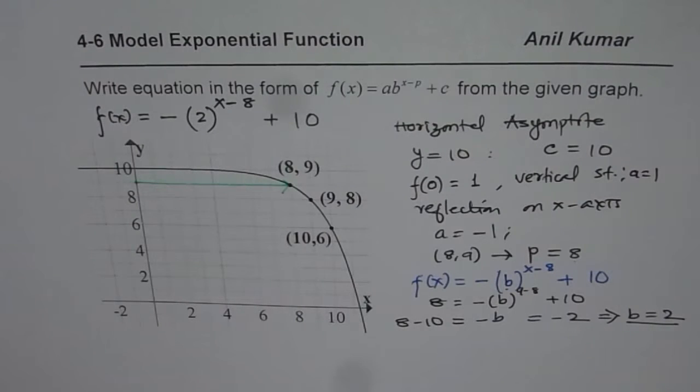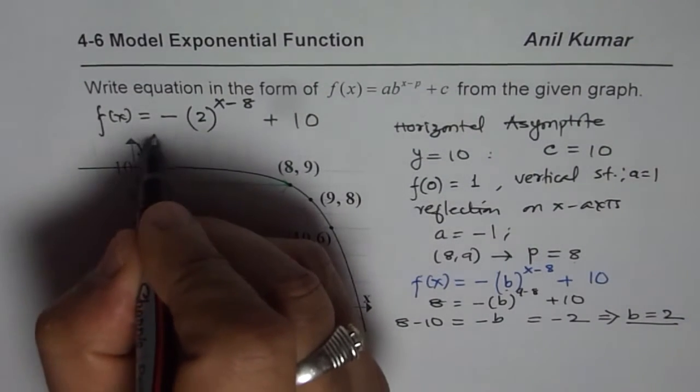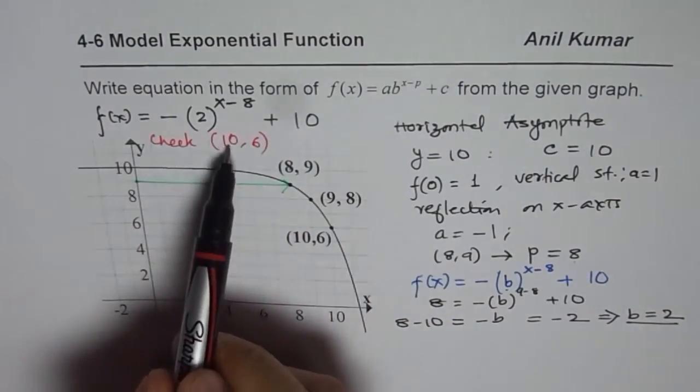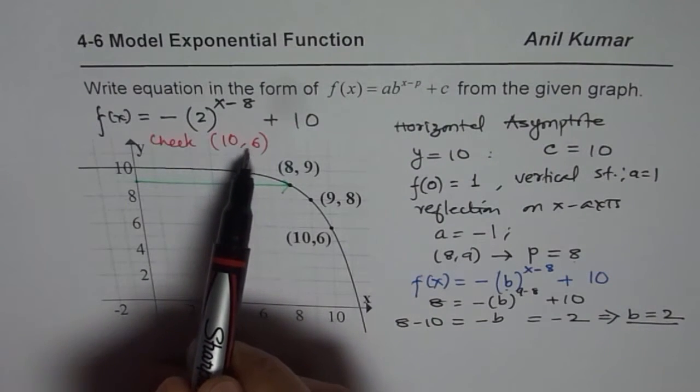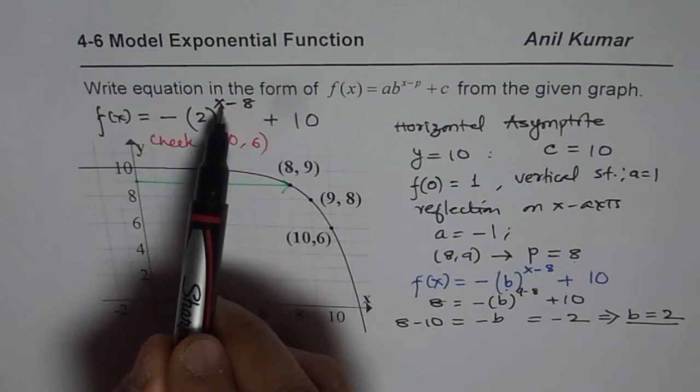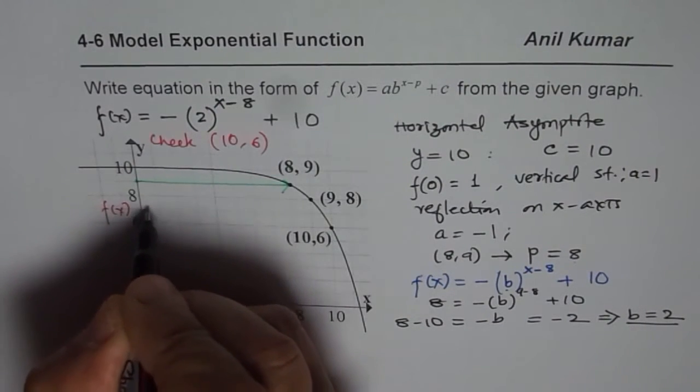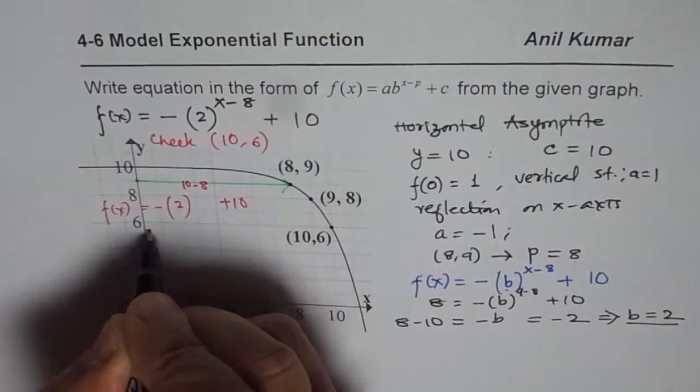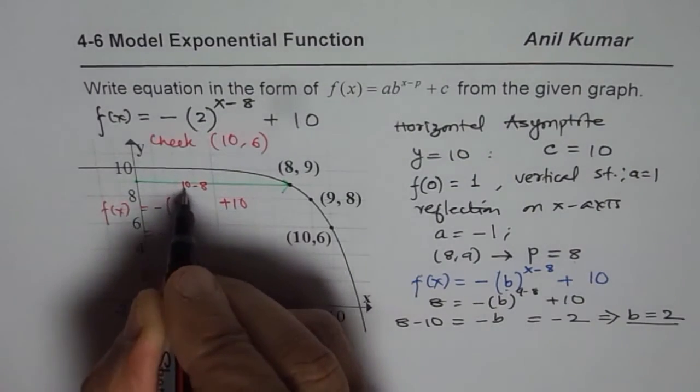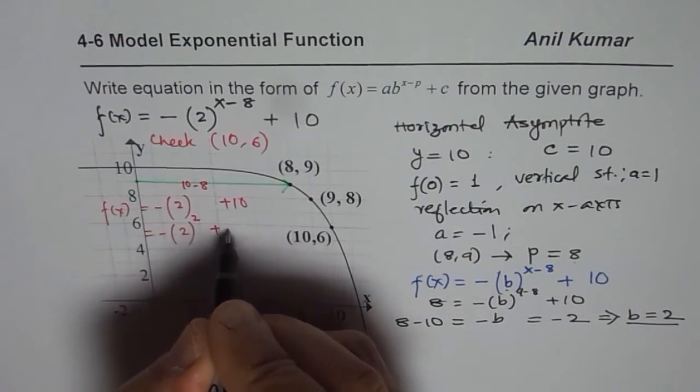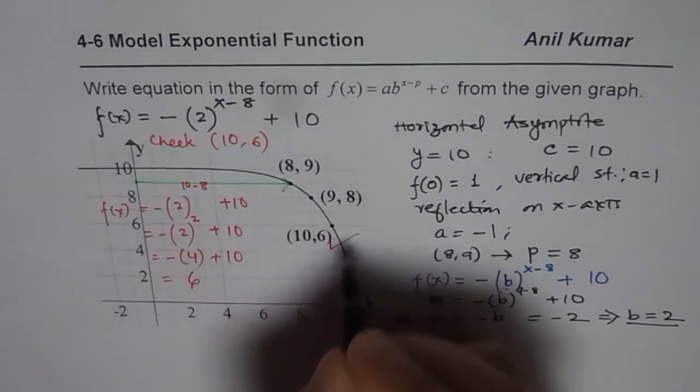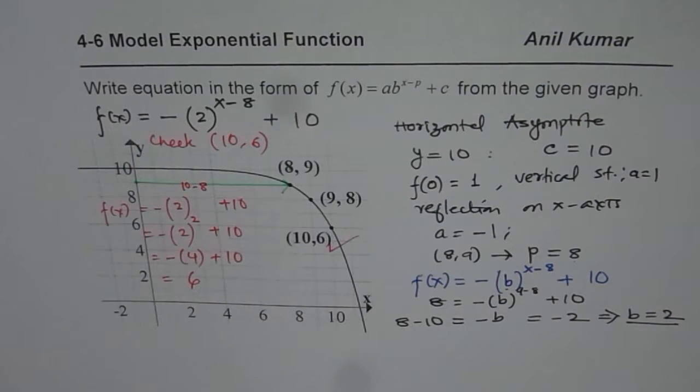Now, as a check, how can you check this? So what you should do is, you should check for the point (10, 6). So if you substitute 10 for x, do you get 6? Let me check here. f(x) equals to minus 2 to the power of 10 minus 8 plus 10. So that will give me minus 2 to the power of 2 plus 10. That is indeed minus 4 plus 10. And that is indeed equal to 6. That means this point falls on the curve itself. And therefore, our equation represents the graph.